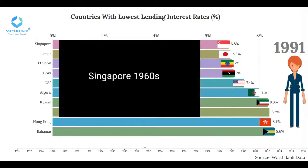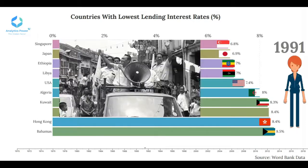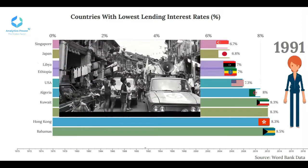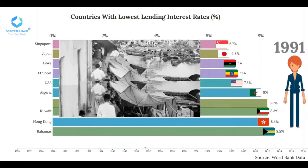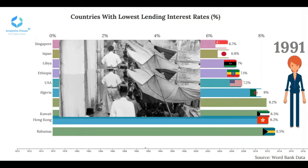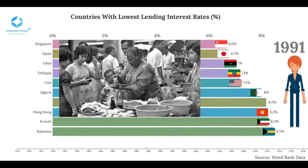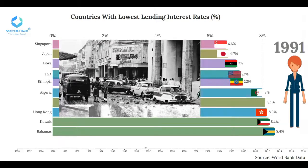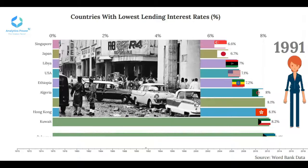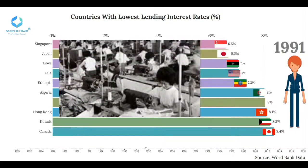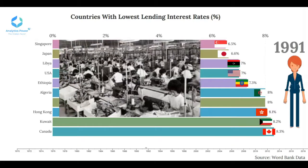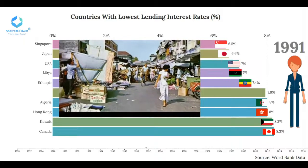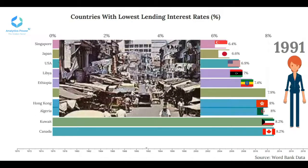In 1965, upon independence from Malaysia, Singapore faced a small domestic market and high levels of unemployment and poverty. 70% of Singapore's households lived in badly overcrowded conditions. Unemployment averaged 14%, GDP per capita was $516 US dollars, and half of the population was illiterate. Singapore has gone through a rapid transformation during the last five decades, from an entrepot predominantly focused on commerce and services in the mid-1960s, into an economy specialising in high-value manufacturing activities and a regional financial hub for business services in East Asia.